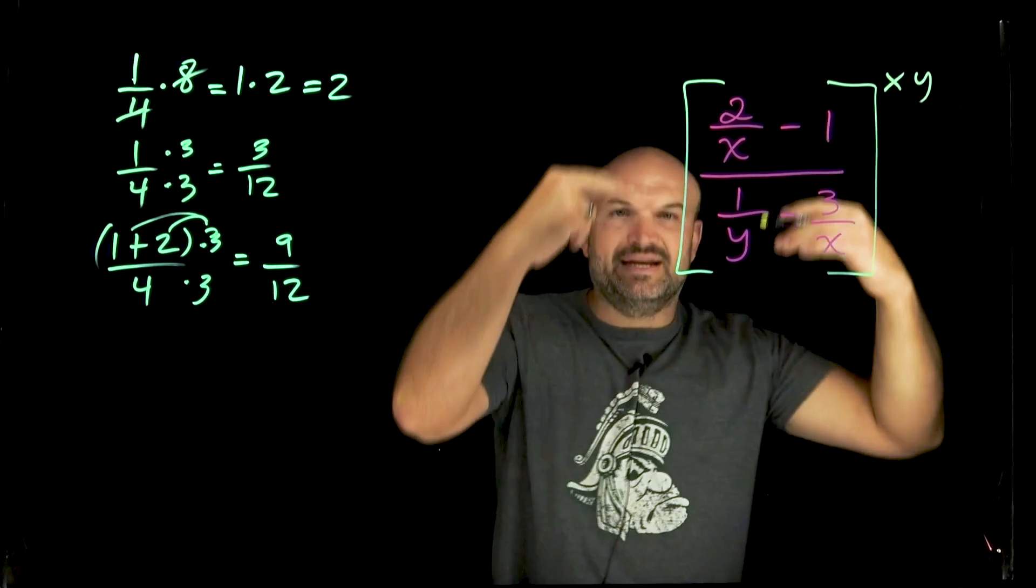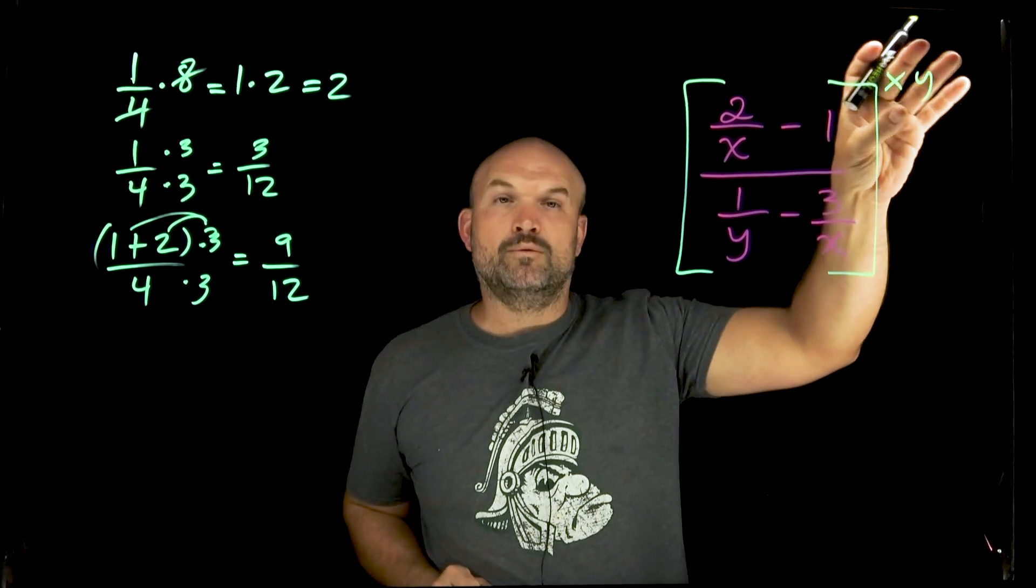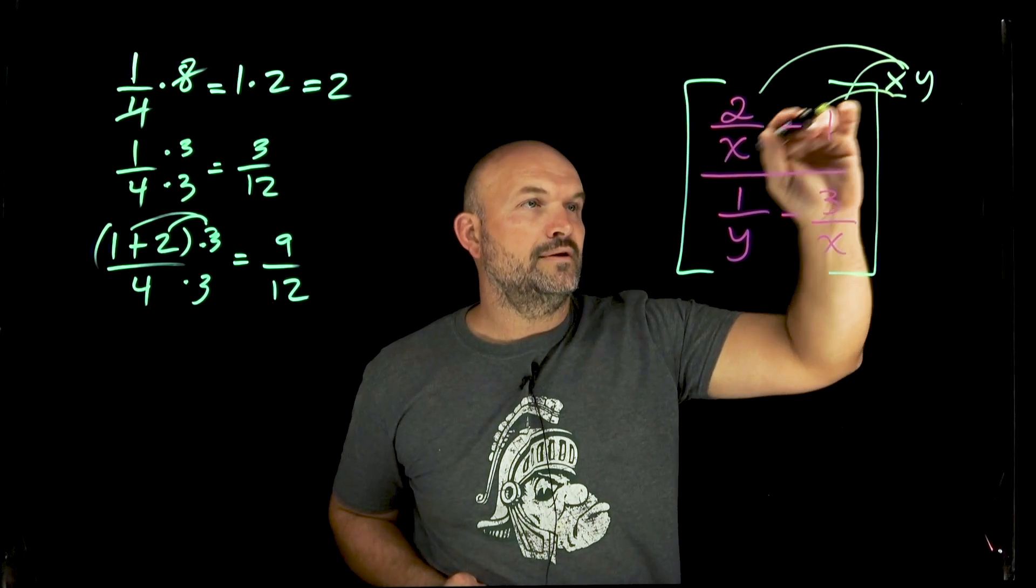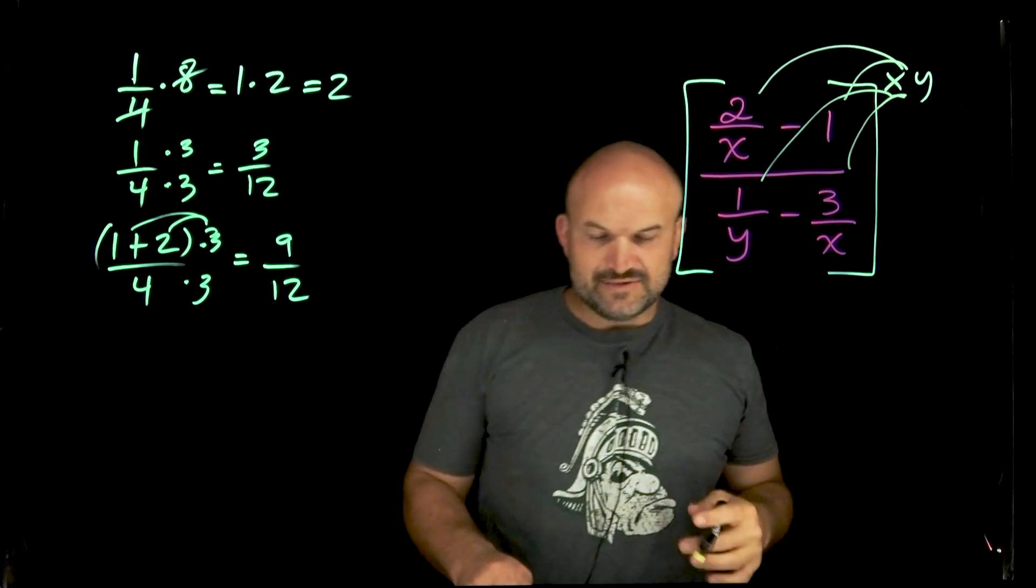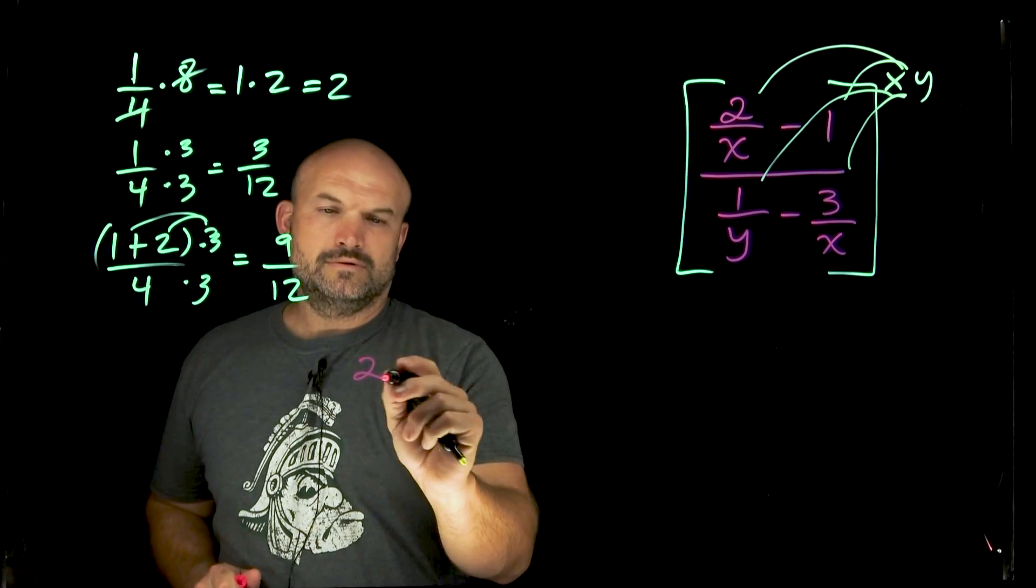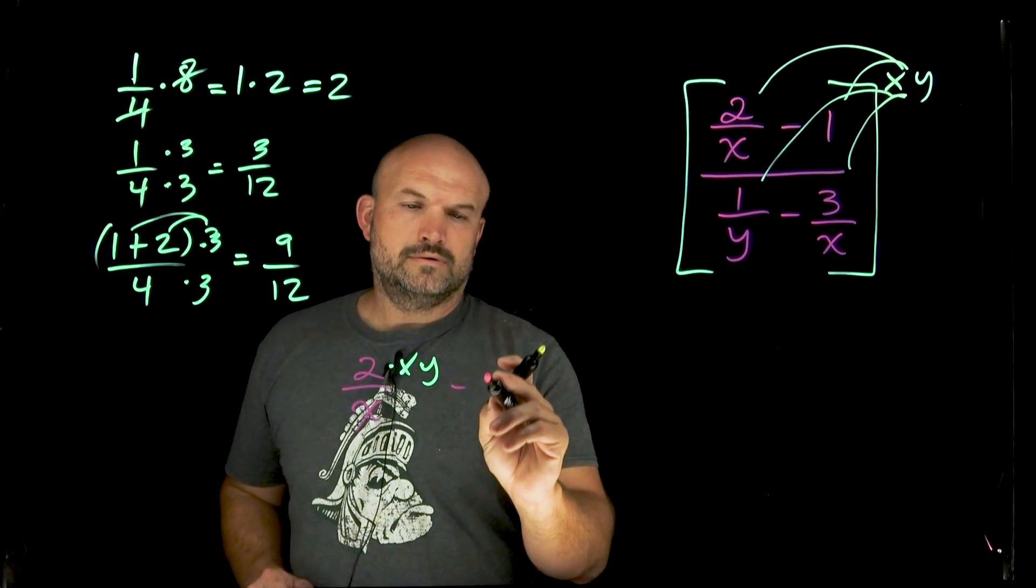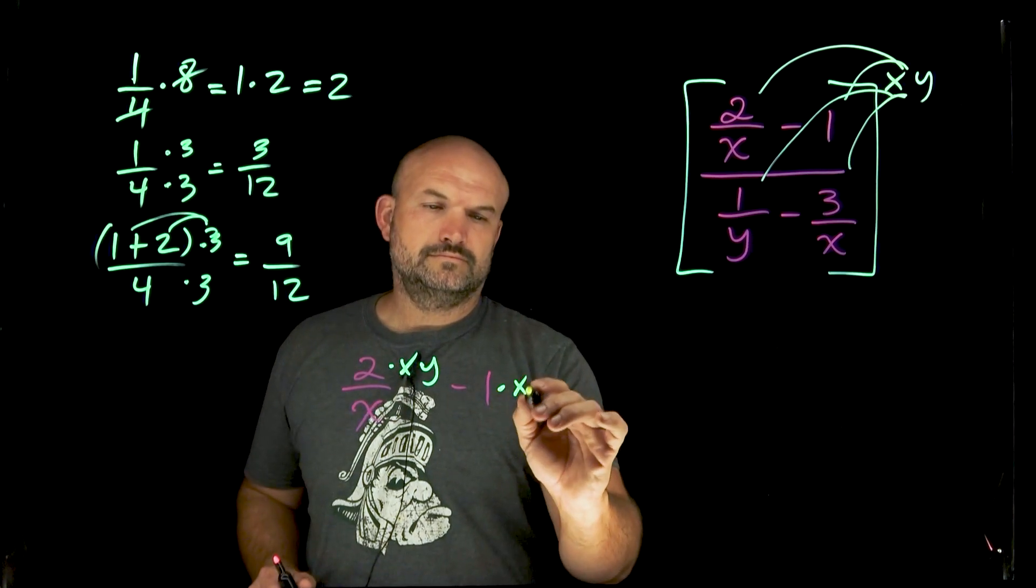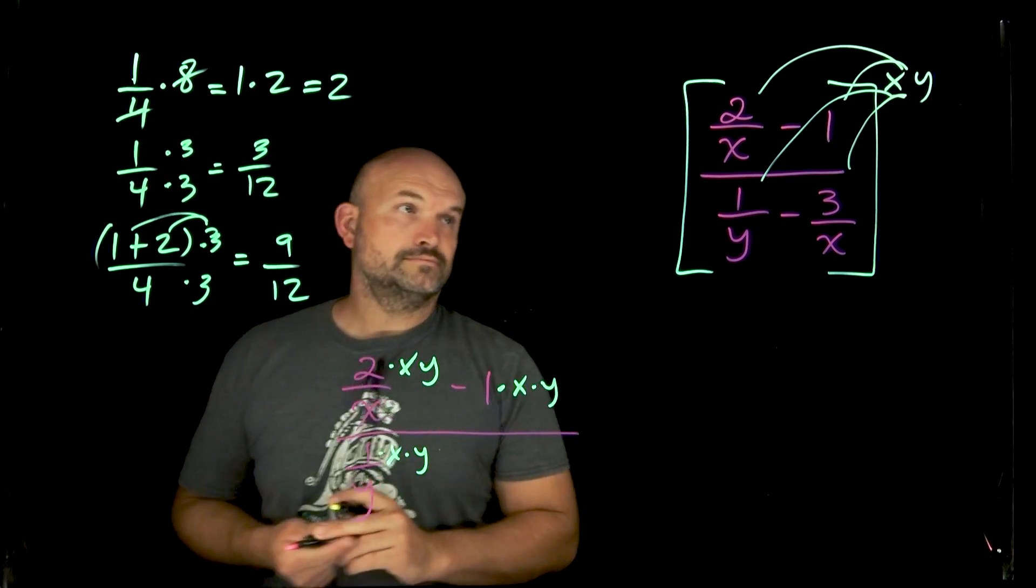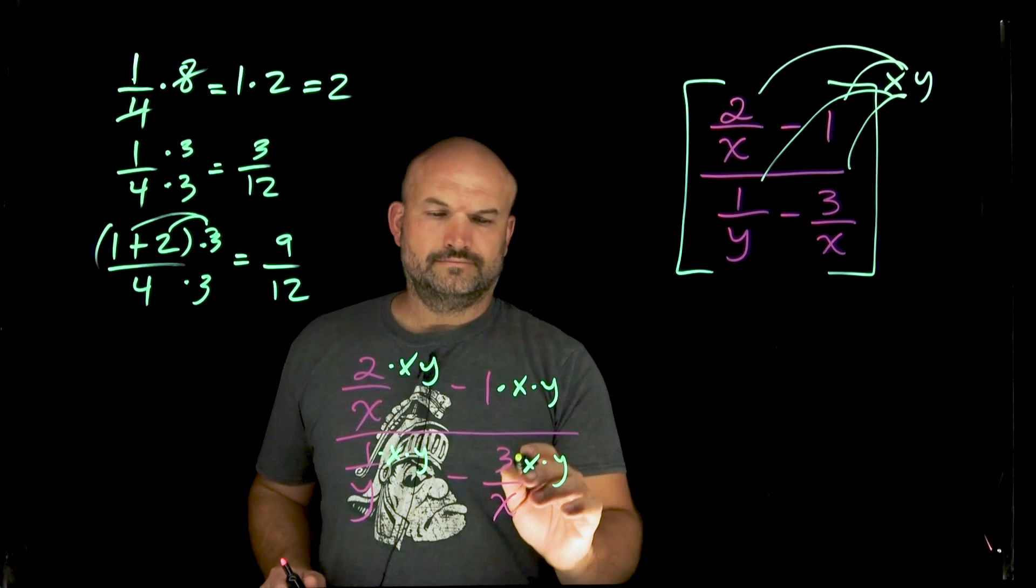Now you could rewrite this on the top and on the bottom to kind of show that equivalence here, but I'm just going to rewrite it once just to save time and show that I'm going to multiply this xy here, here, here, and here. Now, since we have a little bit more time, let's actually write this out so we can see what that would look like.